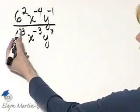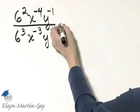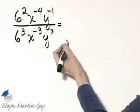Let's simplify this. We are dividing. We have some like bases, so we use the quotient rule.